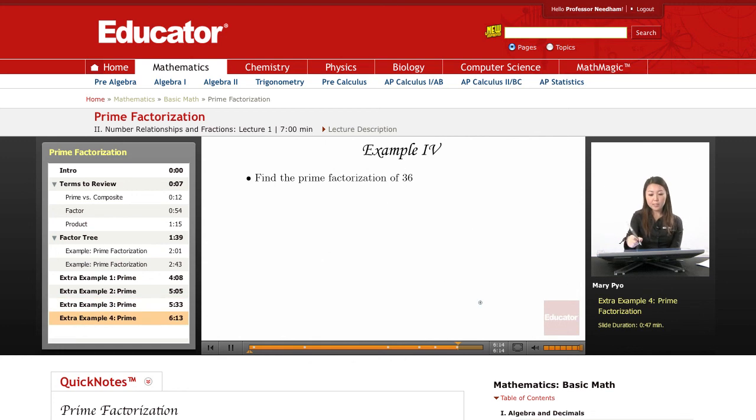Okay. One more example. 36. Again, you have a couple different options. So, let's go with 6 and 6. 6. I can break up in 2. 3 and 2. I'm going to circle those. And then, this 6 also to 3 and 2.